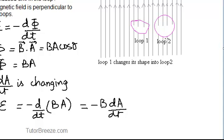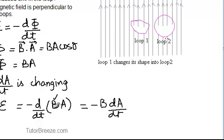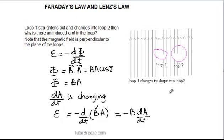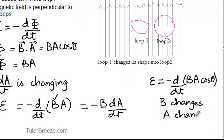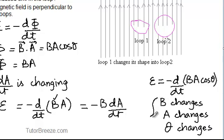Other than a change in area, you can also have an induced EMF if the strength of the field B changes, or if the angle between the coil and the magnetic field changes. We can write this as E = −d/dt(BA cosθ). If any of these factors change — if B increases or decreases, if A changes, or if θ changes — in each of these cases you can have an induced EMF.